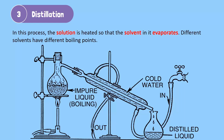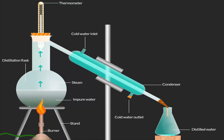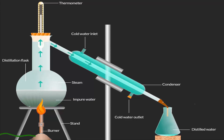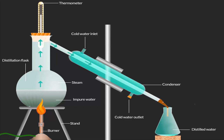For example, if we boil sea water, it turns into steam and evaporates, leaving behind the salt particles present in the sea water. We can change the steam back into water by cooling it down. We can get drinking water from sea water using this method. This water is called distilled water.